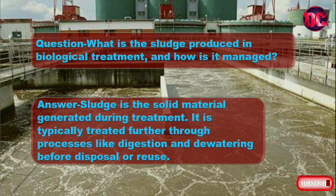Question: What is the sludge produced in biological treatment, and how is it managed? Answer: Sludge is the solid material generated during treatment. It is typically treated further through processes like digestion and dewatering before disposal or reuse.